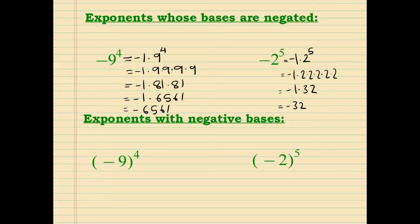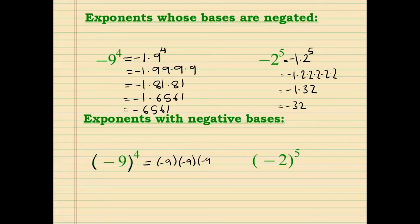When exponents have negative bases, you will most likely see parentheses around the negative sign. That means whatever is inside the parentheses is considered the base, so we multiply the base by itself as many times as the exponent tells us.